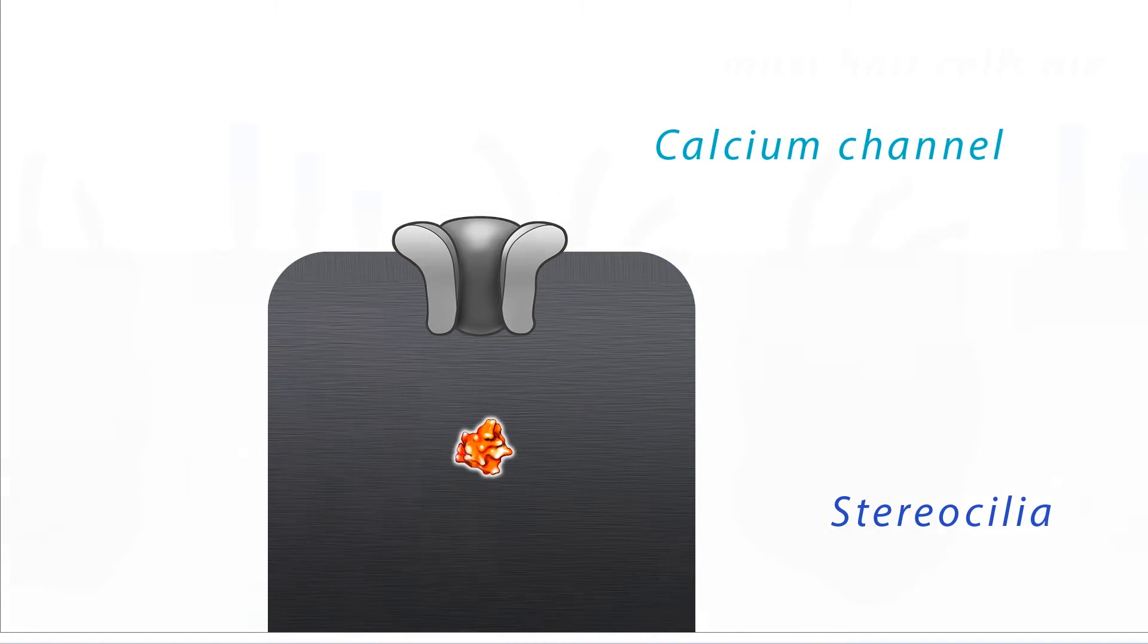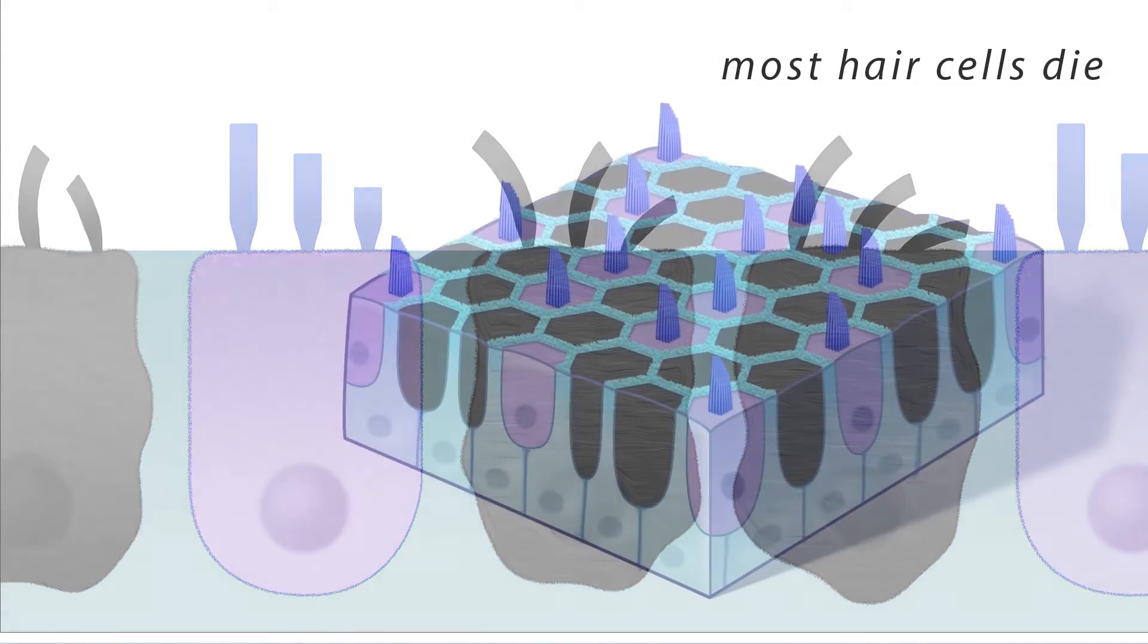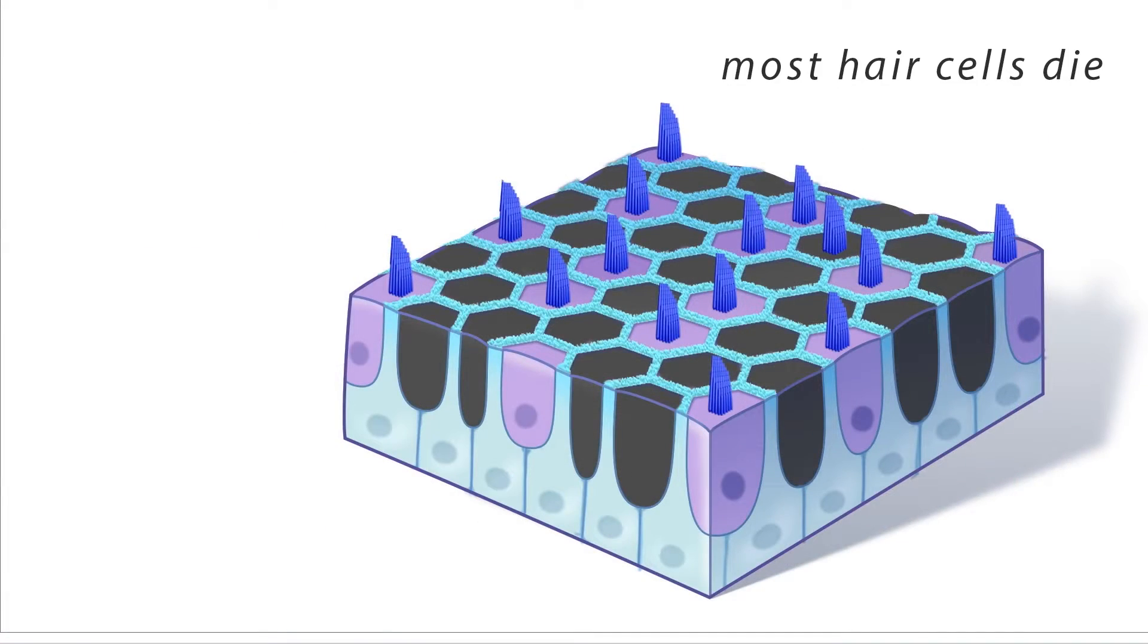It actually goes all the way through, but they don't come back out very easily. So they go in and they accumulate at high levels in the sensory cell. And we postulated that this was how they were killing the cell.